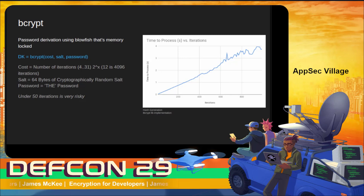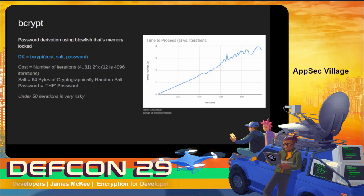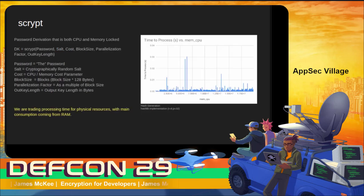The next one is bcrypt, which is really based on Blowfish — an encryption algorithm we'll cover in the symmetric key section. It has a very similar process to PBKDF2 in that it takes salt, a password, and a cost parameter. The cost is measured as an exponent: 2 to the x where x is the cost. Generally speaking, 12 — which is about 4,096 iterations — is a good space to be in. If we go under too few iterations it becomes easy to break.